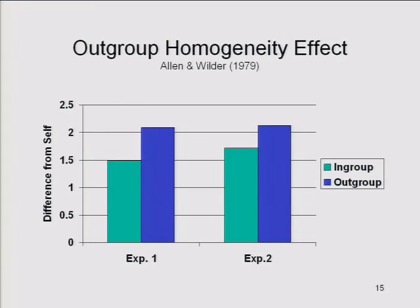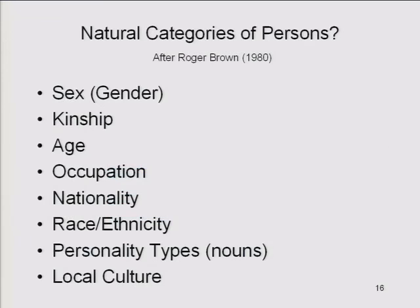Mostly we are not randomly assigned to groups by a coin toss or by our preference for paintings by Paul Klee or Vasily Kandinsky, but there are natural social groupings we belong to, and those are the basic categories for social categorization. Roger Brown, a famous social psychologist, thought about this problem and argued that when it comes to persons, certain categories seem to be very natural — the social world naturally divides itself up in terms of sex, kinship, and age, among others.